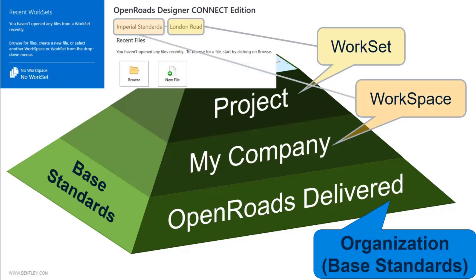If you look at where they appear on the interface, when you first open up the software — OpenRoads Designer, MicroStation, or any of the other products — you'll have the ability to select the workspace on the left. In this case I've got one called Imperial Standards. Once I select that workspace, I can select or create new worksets under it. A workset is equivalent to a project — each project needs its own workset. Files you create in the Connect Edition products also get associated with a workset, so when you open a DGN file it automatically loads the workset it was last opened with.